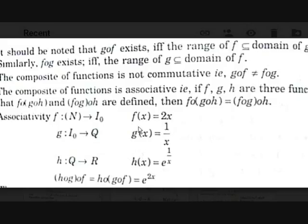Now taking h∘(g∘f): g∘f means substitute 2x in place of x in g, giving 1/(2x). Then h of that means substitute 1/(2x) in place of x in h, giving e^(1/(1/(2x))) = e^(2x). Both results are the same, confirming associativity.